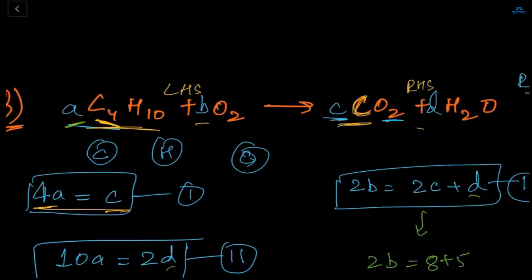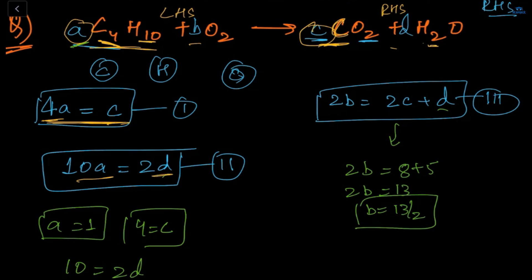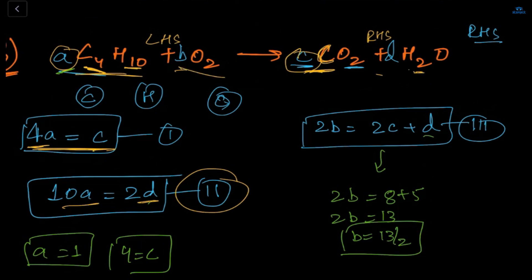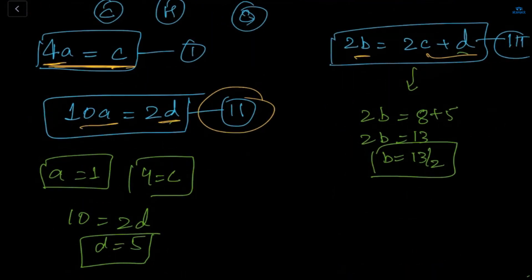For carbon in C4H10: on the left is 4, on the right is 1, so 4a = c. For hydrogen: 10a = 2d. For oxygen in the CuO equation: on the LHS there is one oxygen from CuO; on the RHS there is one oxygen from H2O only. So a = d. Now simple mathematics: we count how many times each variable appears.